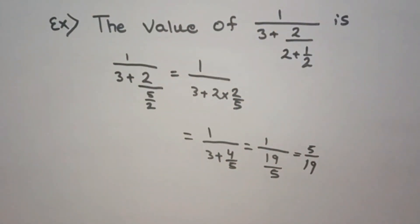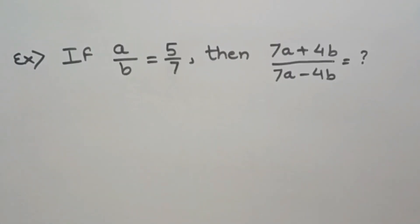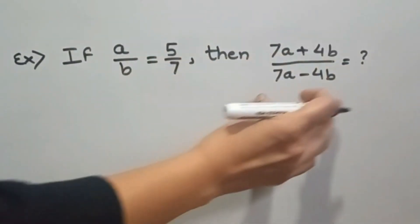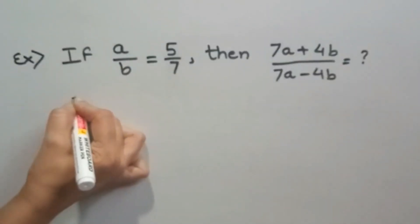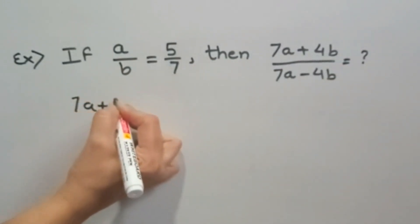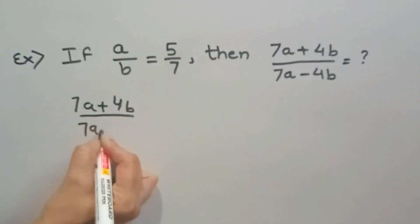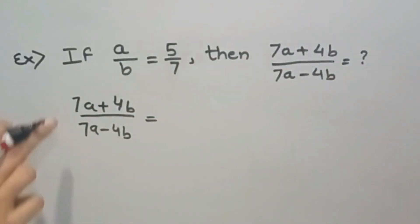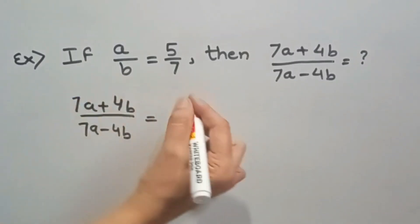If a by b is equal to 5 by 7, then 7a plus 4b upon 7a minus 4b is equal to what? We have to find the value of this term. 7a plus 4b upon 7a minus 4b. So what we will do, we will divide numerator and denominator by b.